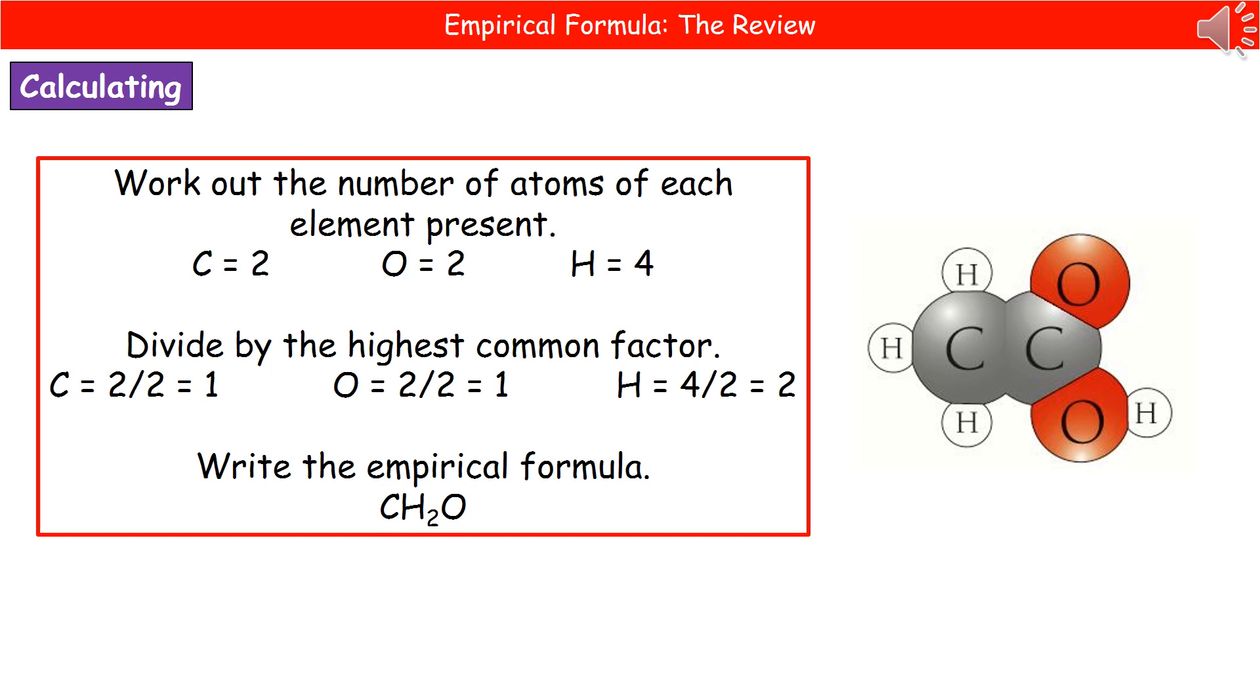Next thing, we divide by the highest common factor. So the highest common factor of 4 and 2 is quite obviously 2. Then you divide by the highest common factor there. So carbon, 2 divided by 2, gives us 1. Oxygen, 2 divided by 2, is 1 again. And then our hydrogen, 4 divided by 2, gives us 2.